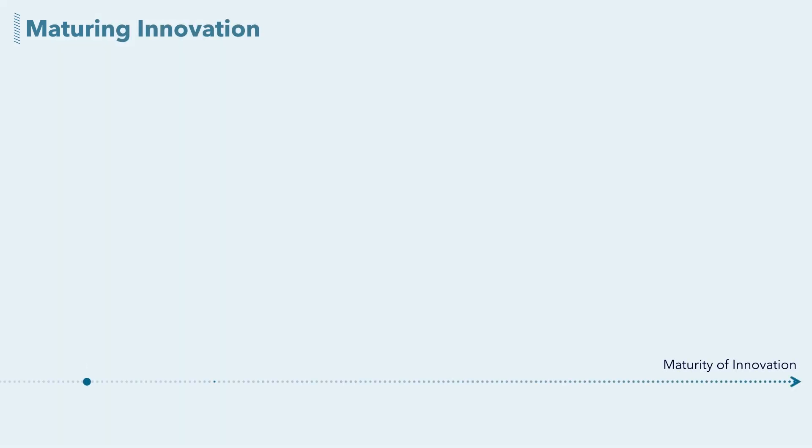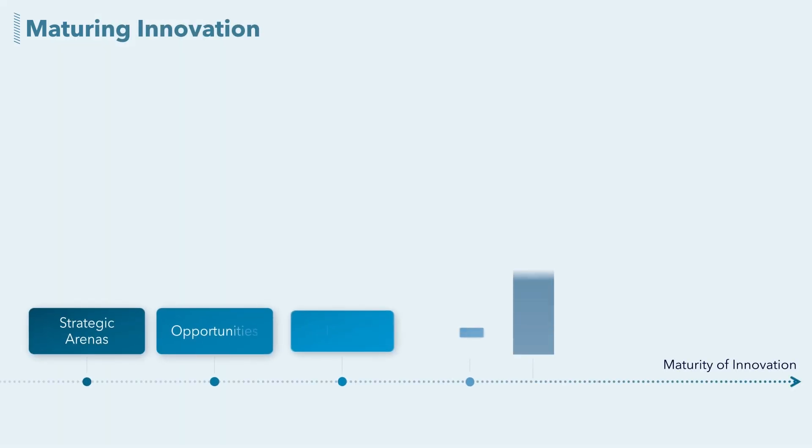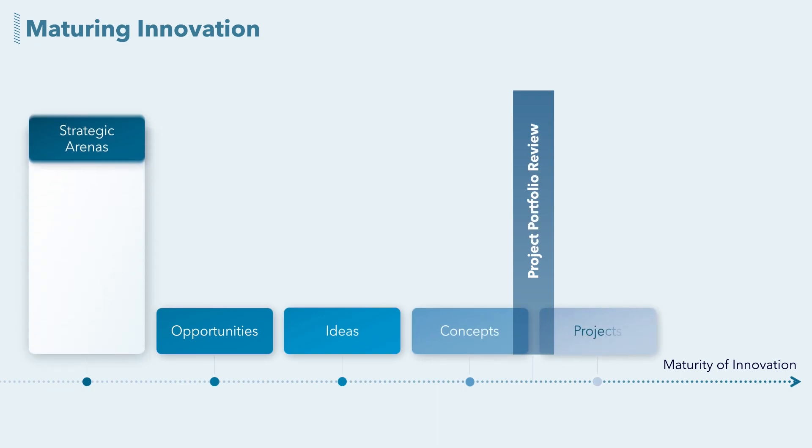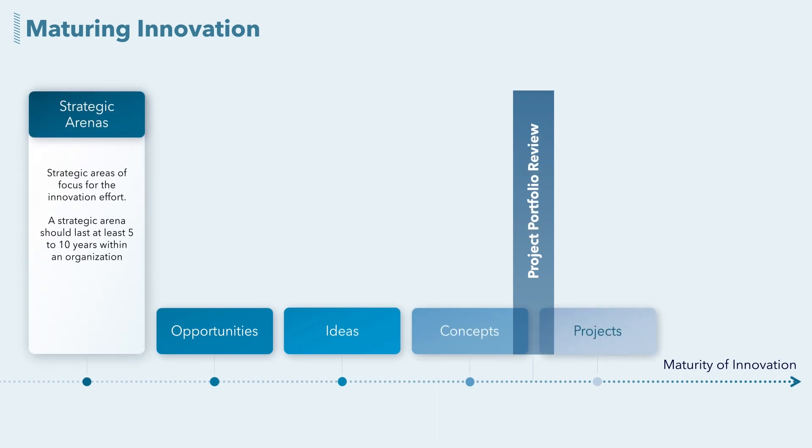Front-end innovation allows innovation to mature cheaply because changes can be made at very low cost. To establish a common language, it's important to clearly state what maturity stage you are at in the front-end innovation process. The innovation strategy is composed of strategic arenas — the areas of focus for your innovation effort. A strategic arena should last between five and ten years within an organization.